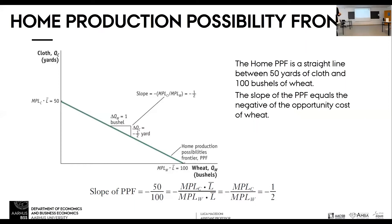The slope is the opportunity cost of whatever is on the x-axis. The slope is the rise over the run — how much you give up of the vertical axis good to increase the horizontal axis by one unit. The slope of this production possibility frontier is minus one half. So the opportunity cost of wheat is one half unit of cloth.